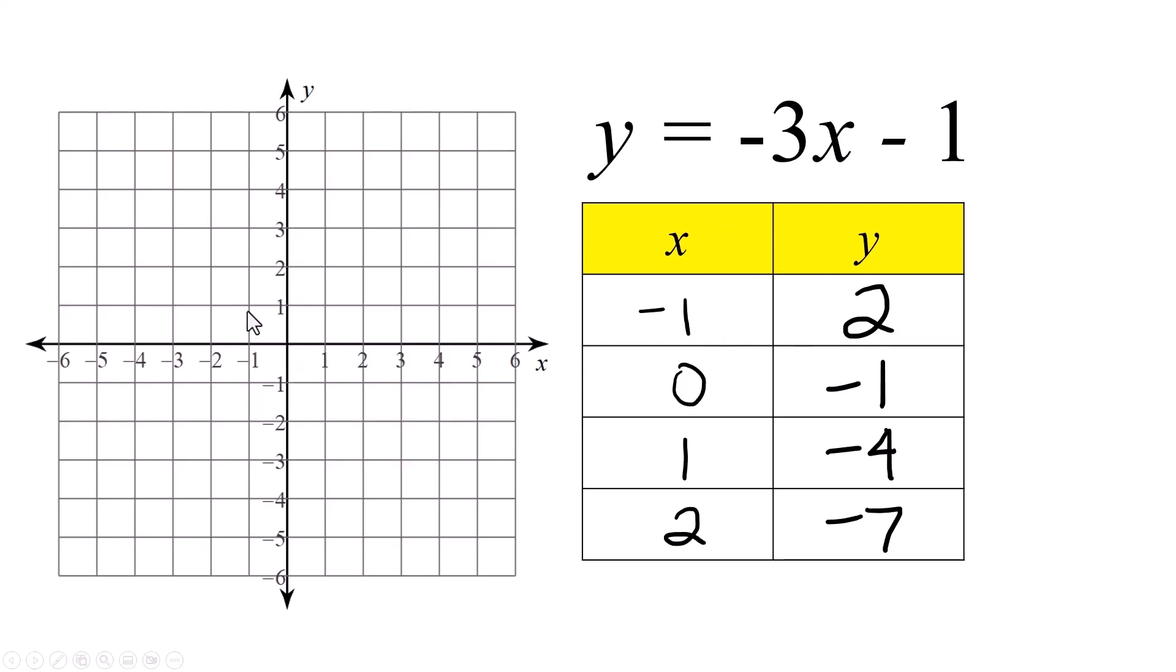The y-intercept is where the line is going to cross the y-axis. That's what I want to focus on. Negative 1 and 2 is right here. Zero, negative 1 is down here. One, negative 4 here. And then 2, negative 7 goes off the graph, but not by much. I'm going to estimate it right there. In a little bit I'll show you how to do that when it goes way off the graph. Let's draw the line.